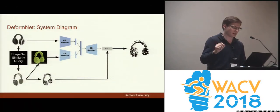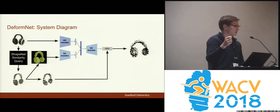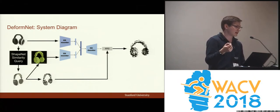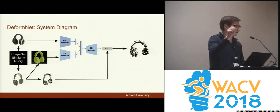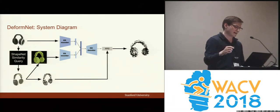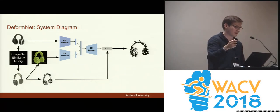Here we have the control flow of how DeformNet works. We start in the top left with the input image — the image from which you want to produce a reconstruction. Then we retrieve our template using a similarity query, relying on existing techniques in metric learning. Having retrieved the template, we represent it in two ways: as voxels and as a point cloud. We use the voxel representation as input to a 3D encoder, and also input the original image to a 2D encoder. Then we combine the encodings of both and input that to a decoder, which produces the offsets of the points in the freeform deformation control grid, which then defines the deformation.